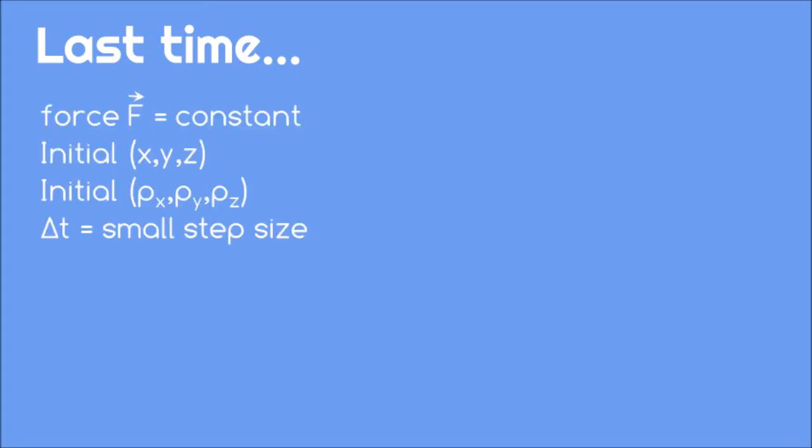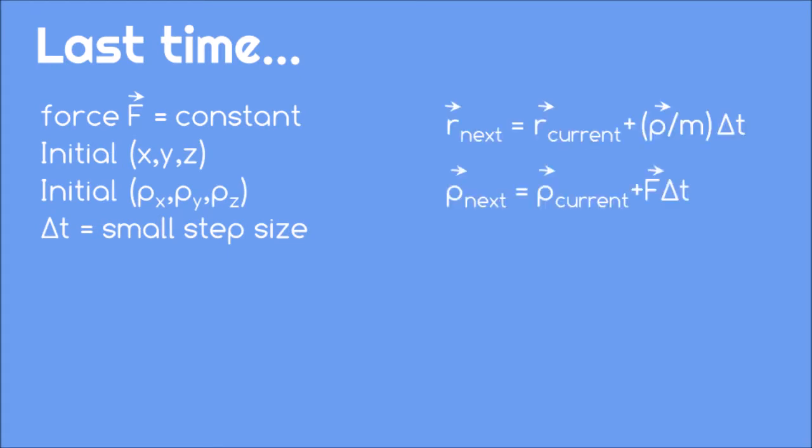After we give an object's initial position and initial momentum, we use one equation to update the momentum and a similar equation to update the position. By repeating this process, we can move our simulation forward as many steps as we want.